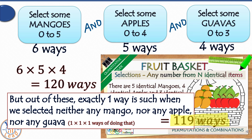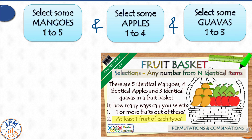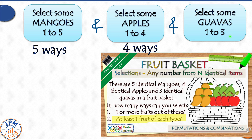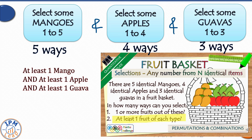For the second part, we need at least one fruit of each type. Mangoes can be selected from 1 to 5 — that's 5 ways. Apples from 1 to 4 — that's 4 ways. Guavas from 1 to 3 — that's 3 ways. Since we need at least one of each, we multiply: 5 × 4 × 3 = 60 ways.